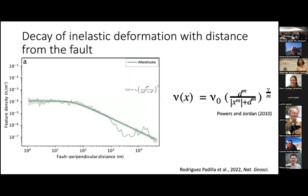So I'm going to start looking at feature density - this is aftershocks on the y-axis, number per meter square, and then fault-perpendicular distance on the x-axis. I'm fitting these decays with the expression of Powers and Jordan 2010. This expression has a few terms: V-naught is the intercept, the fracture density near the fault; D is the corner that bounds the end of the location where the aftershock density stays constant; gamma is the slope of the decay - the power law exponent; and M is the sharpness of the corner, held equal to 2 following the practice of Powers and Jordan.